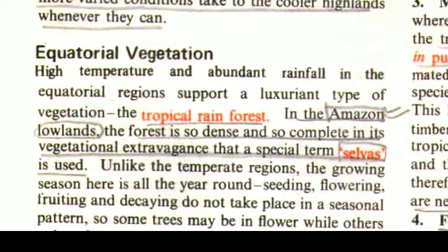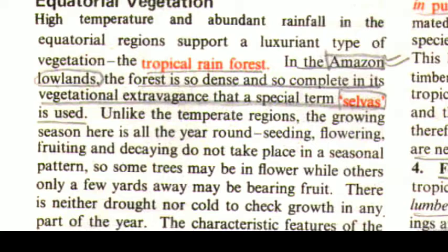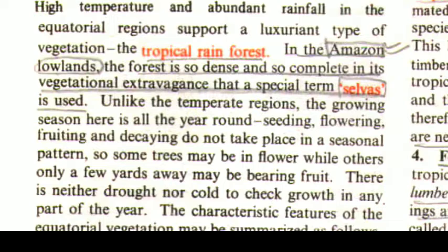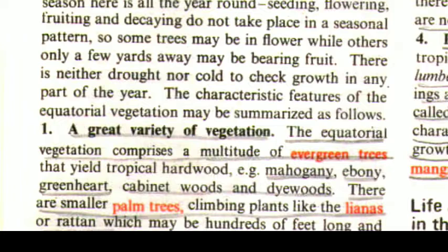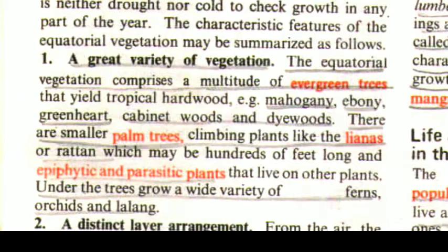High temperature and abundant rainfall in the equatorial regions support a luxuriant type of vegetation — the tropical rainforest. In the Amazon lowlands the forest is so dense and so complete in its vegetational extravagance that a special term, 'selvas,' is used. Unlike the temperate regions, the growing season here is all year round. Seeding, flowering, fruiting, and decaying do not take place in a seasonal pattern, so some trees may be in flower while others only a few yards away may be bearing fruit. There is neither drought nor cold to check growth in any part of the year.